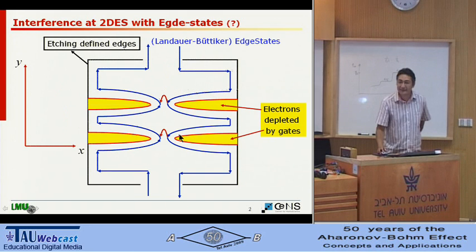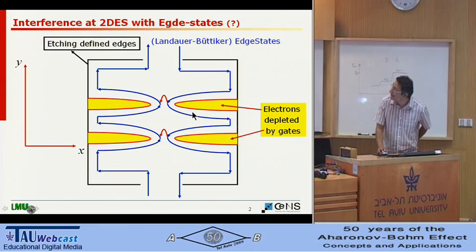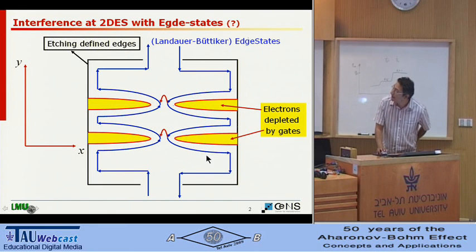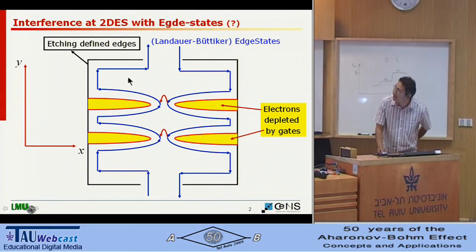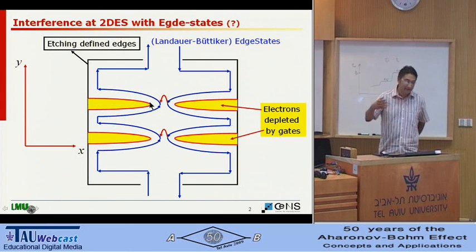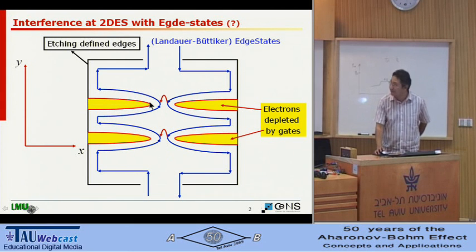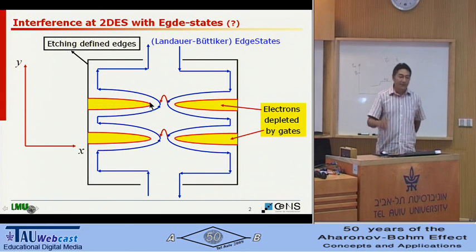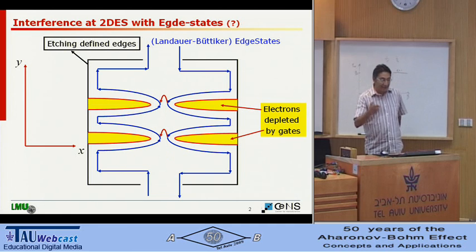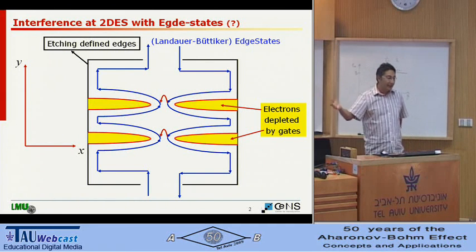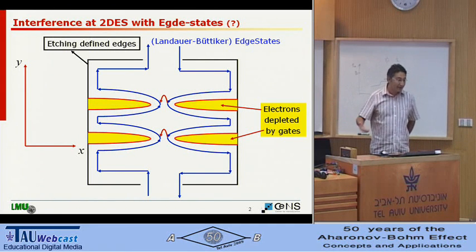You have seen such figures showing that these edge states, which are called Landauer-Büttiker type edge states, are going from one side to the other side, they are interfering, and then you can see this interference pattern. But until now it was always taken like God-given edge states — so what are really these edge states?